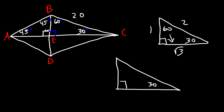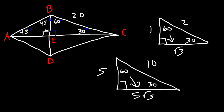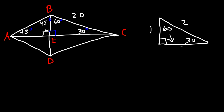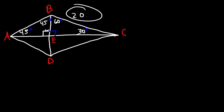Here the hypotenuse BC is 20. Across the 30-degree angle, EC is half of 20, which is 10. Since E is the midpoint of BD, BE and ED are congruent, so ED is also 10. Across the 60-degree angle, EC gives us 10 square root of 3. So the diagonal AC has the segment from E toward C equal to 10 square root of 3.